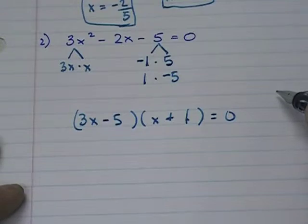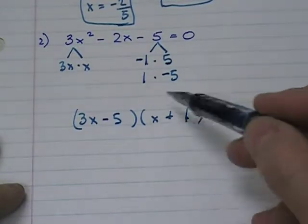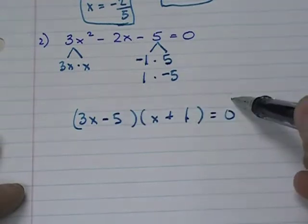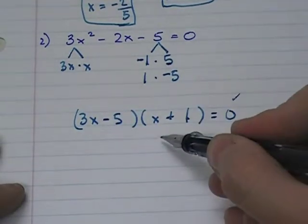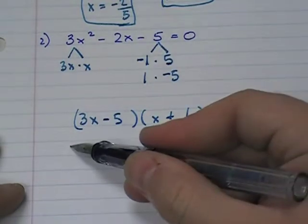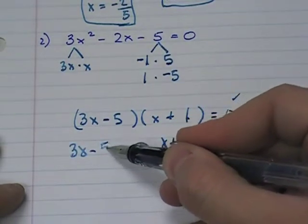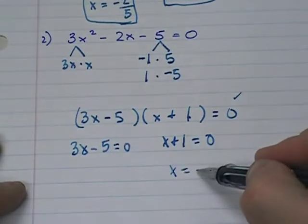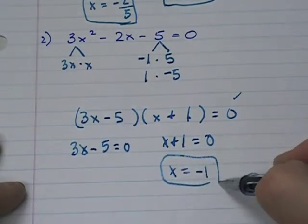Once you get this factored, again, we use the 0 property. If this equals 0, 0 times anything makes this a true statement. So we set this equal to 0. And we set this equal to 0. So this gives us x equals negative 1. Simple answer.